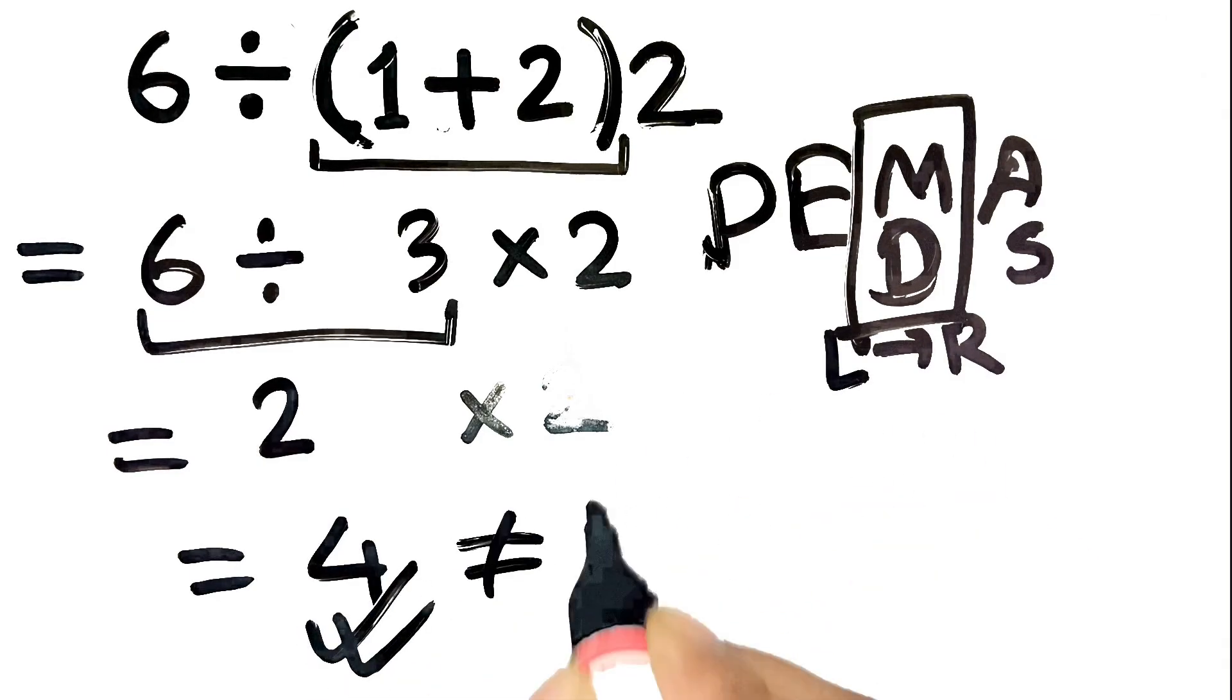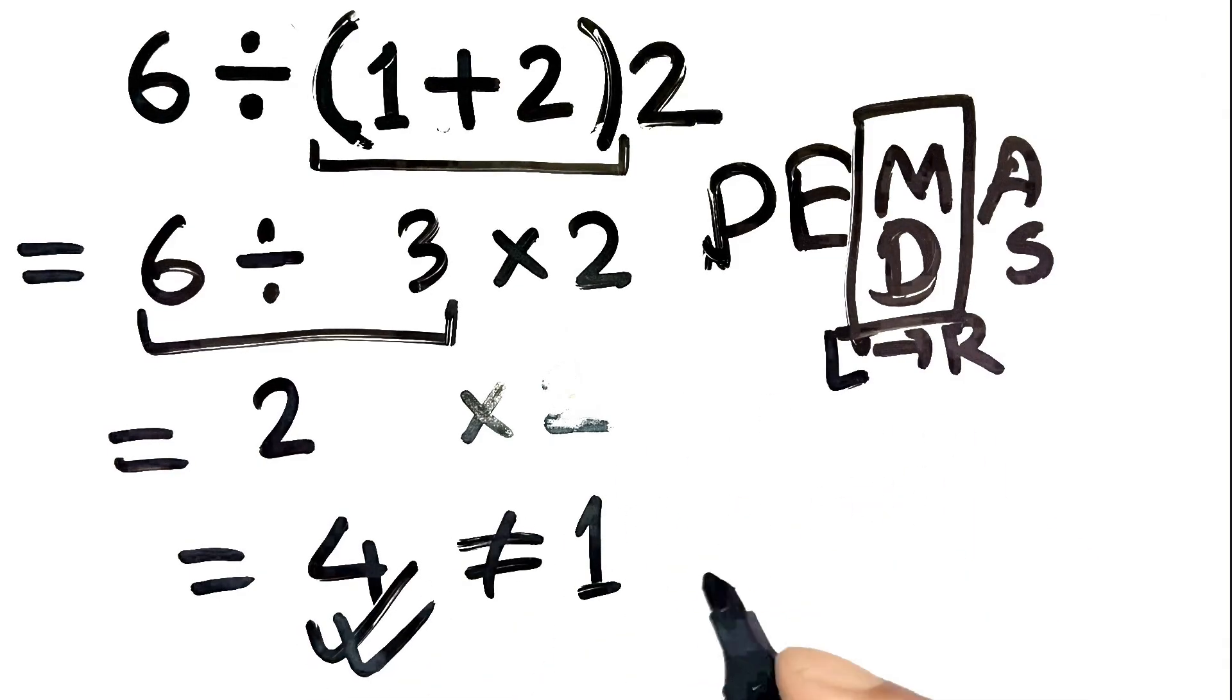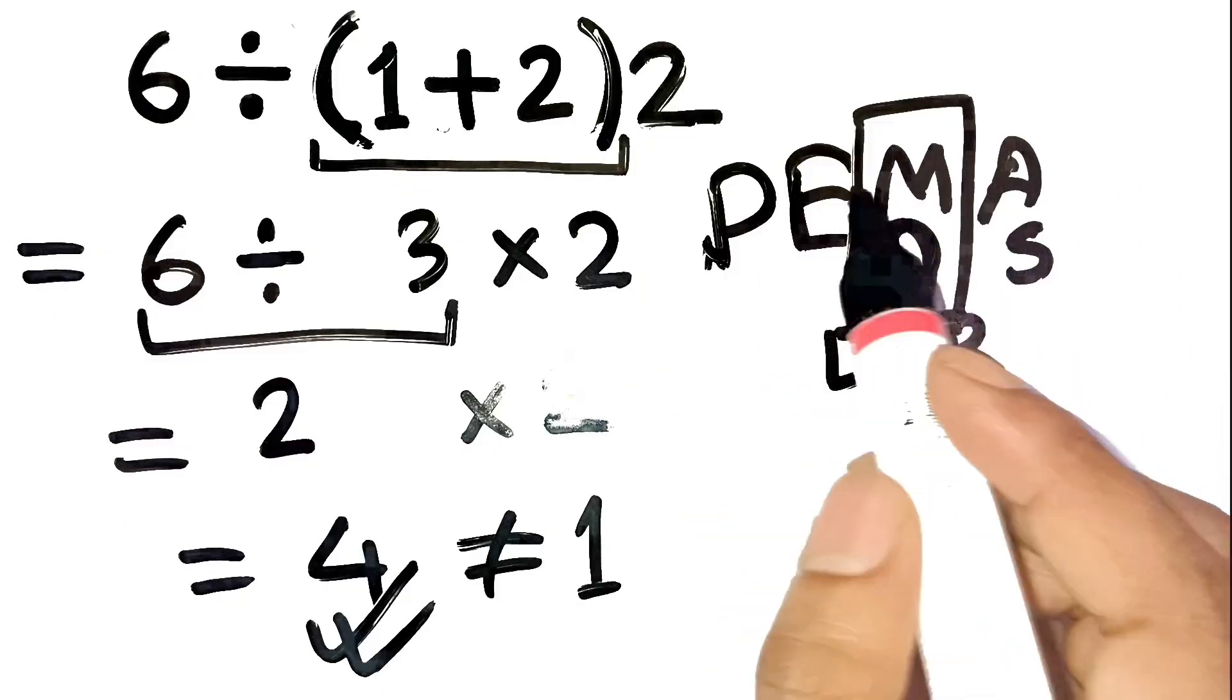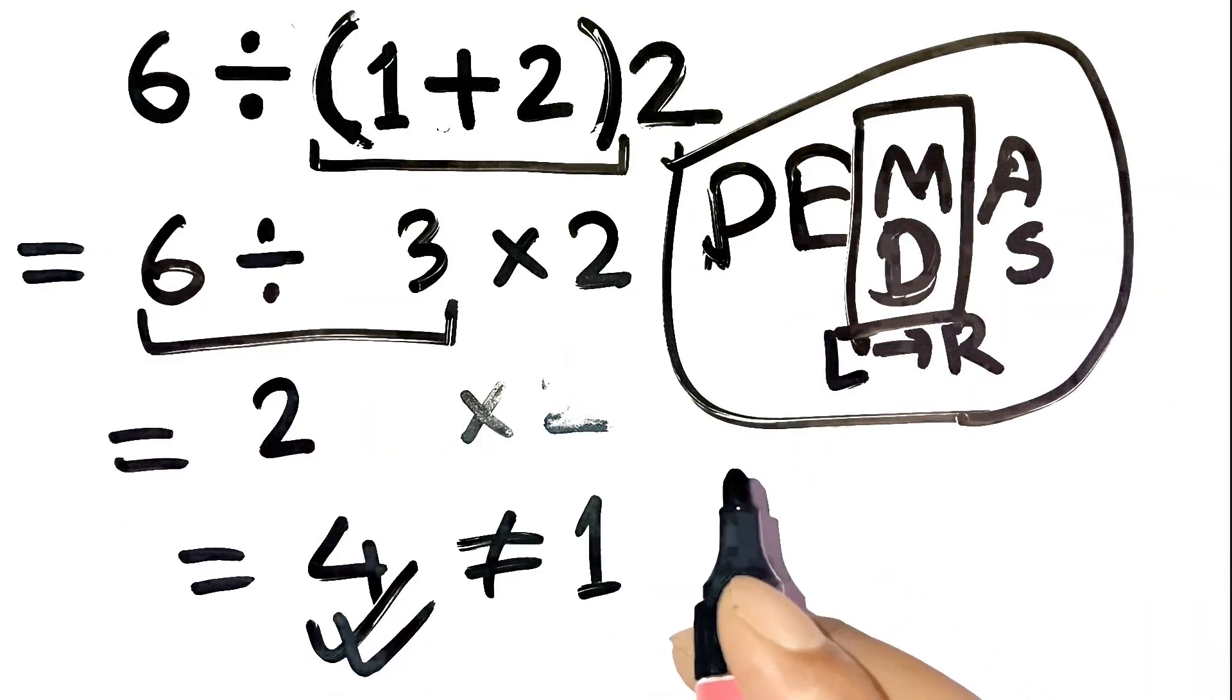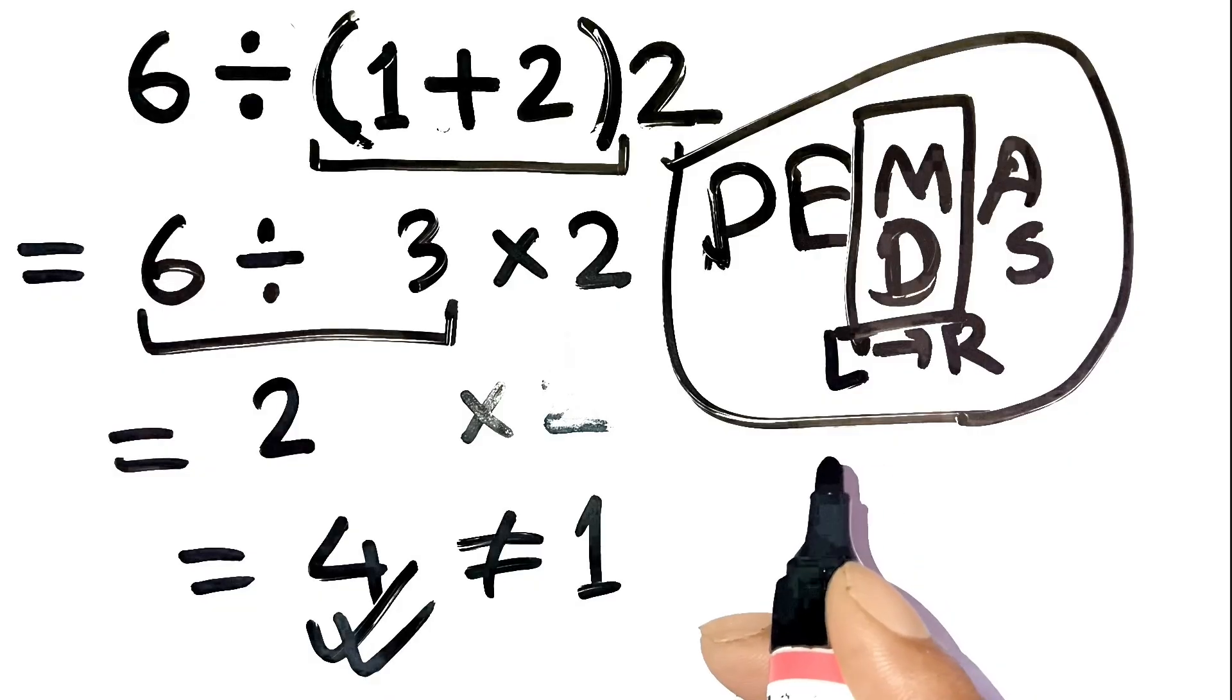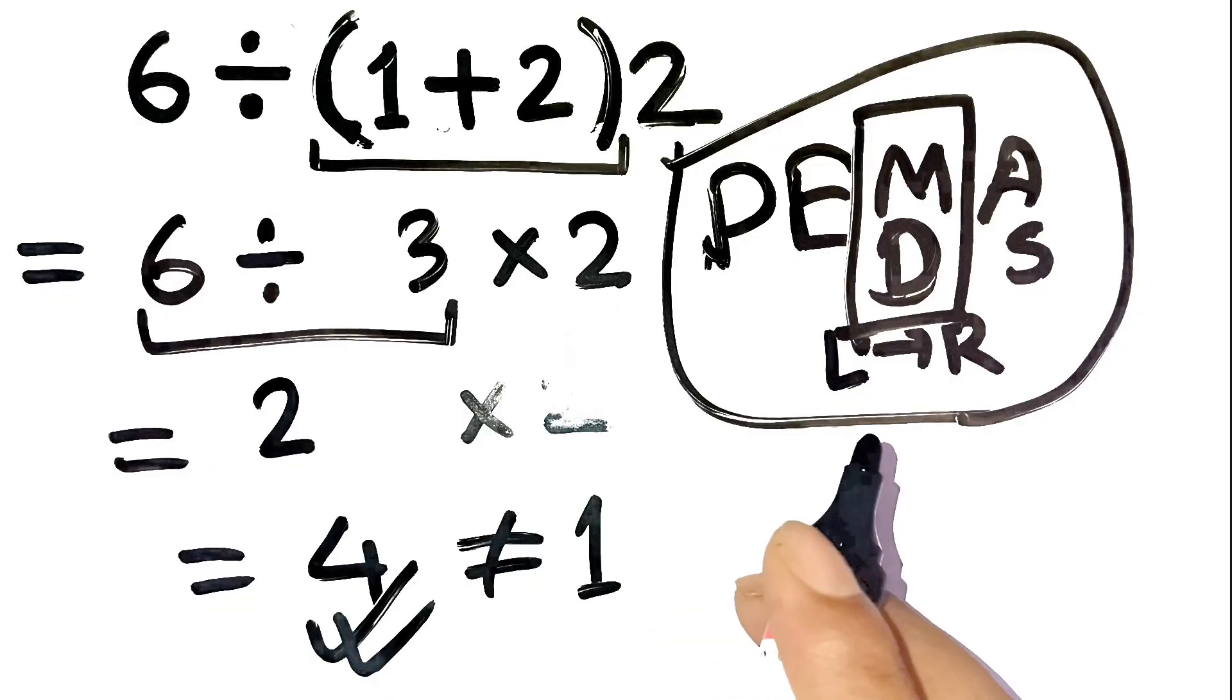So the correct answer is 4, not 1. See, it's a small detail in the order of operations, but it totally changes the result. If you have any valid arguments or want to show me a different method, write it down in the comments. Thanks for watching.